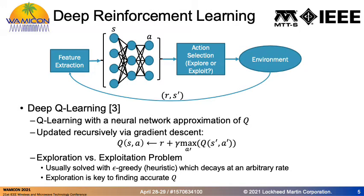A very important problem in deep reinforcement learning is the problem of exploration versus exploitation. That's handled in the action selection policy. When the policy decides to explore, it neglects the output of the Q function and decides to act randomly in order to obtain new information about taking different actions in different states. When it decides to exploit, it leverages the Q function output and takes the action expected to give the best reward. This problem is usually solved using an epsilon greedy algorithm, which introduces a parameter epsilon — the probability of exploration — that is set to decay over time at an arbitrary rate.